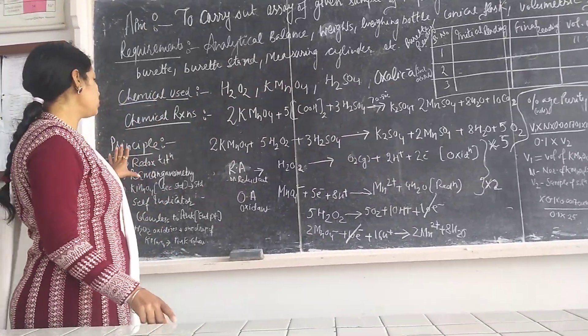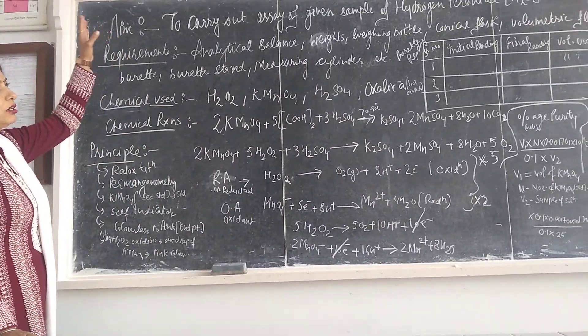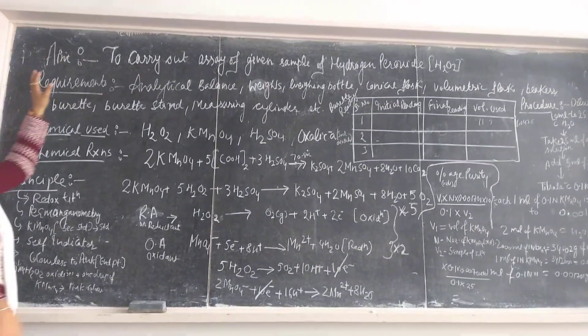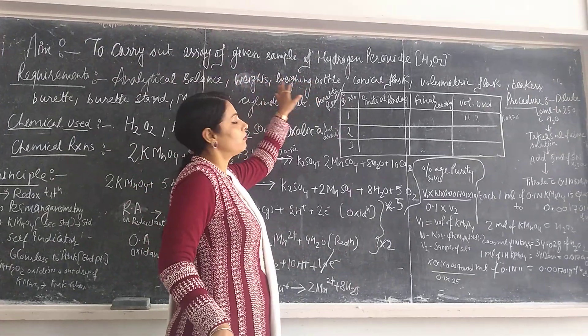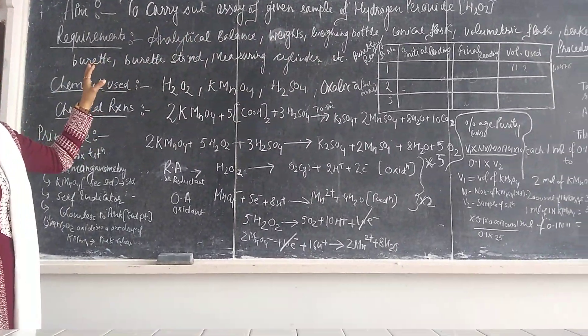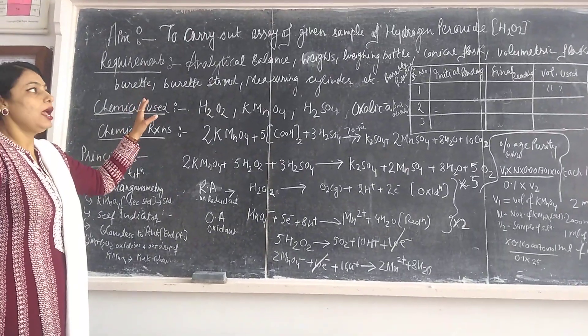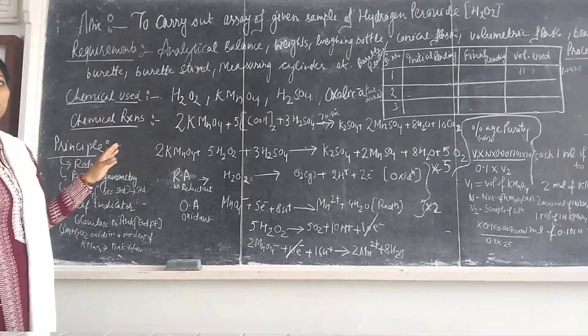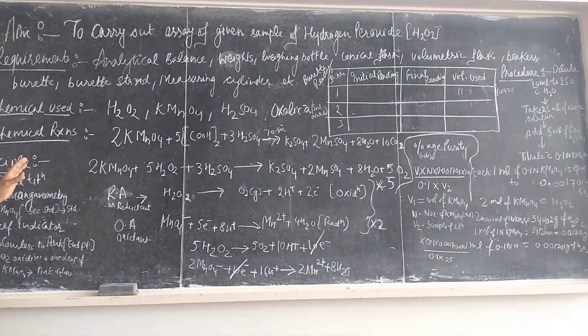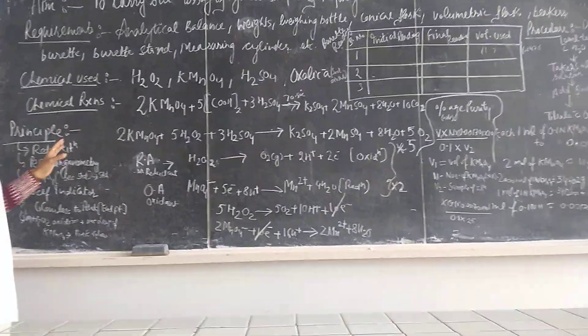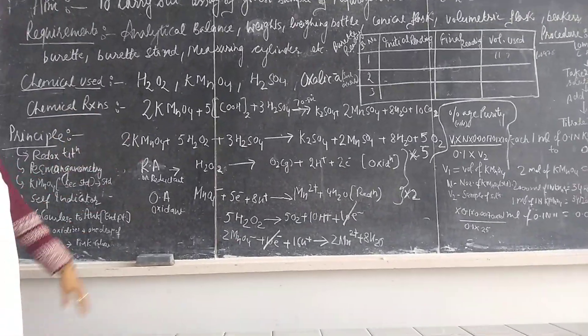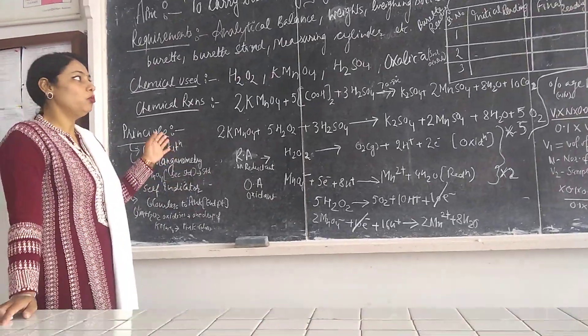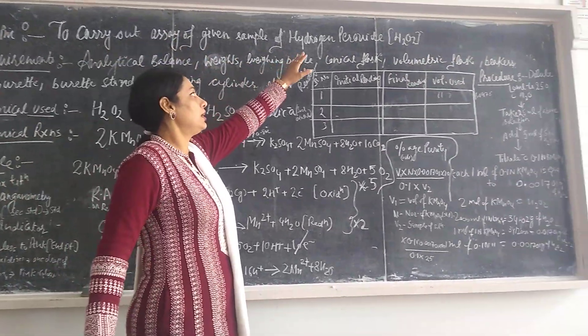In the case of titrating H2O2 with KMnO4, KMnO4 will act as a self indicator. As we know the color of KMnO4 is dark intense purple in color, so it will act as a self indicator and the reaction proceeds from colorless to pink color solution at the end point. We have pink color when all our hydrogen peroxide is consumed.